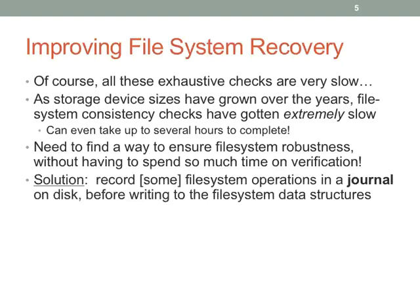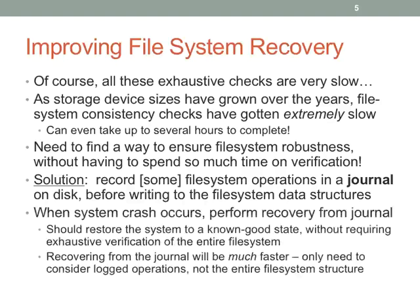The most widespread solution is some kind of journal. When we want to modify file system data structures — the structures that say where files are, where directories are, what files are referenced by what — we have to record it in the journal. When the system crashes, we just look at the journal to see what we were doing. Instead of having to check all the state of every part of the file system, we just look at the stuff we were trying to change when the crash occurred.